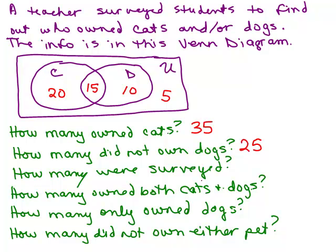How many were surveyed? You add up the total number of students by adding all four numbers. So 20 plus 15 is 35, plus 10 more is 45, plus 5 is 50. So there were 50 surveyed.